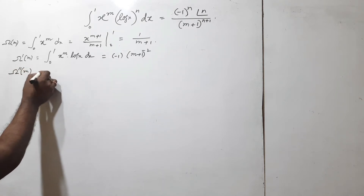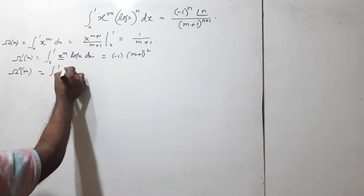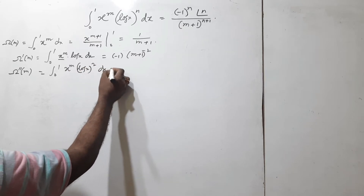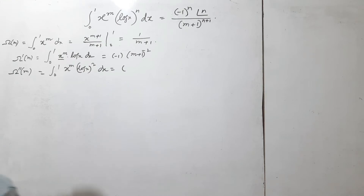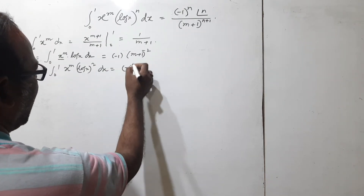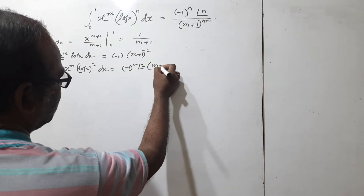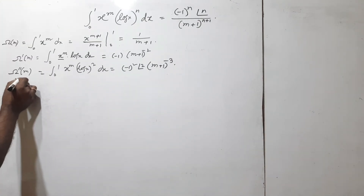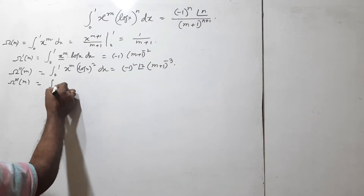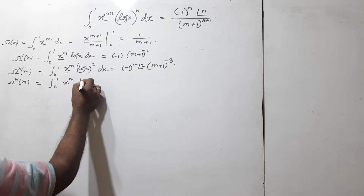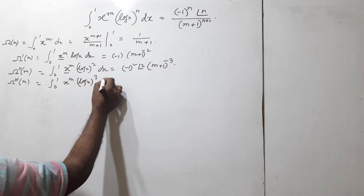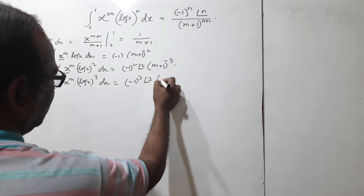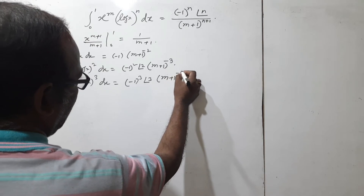Again, ρ''(m) — differentiating a second time with respect to m — gives the integral from 0 to 1 of x^m times (log x)^2 dx, and on the right side (-1) times (-2) which we write as (-1)^2 times 2!, times (m+1)^(-3). Doing the third order again, we get the integral from 0 to 1 of x^m times (log x)^3 dx, and the right side is (-1)^3 times 3! times (m+1)^(-4).